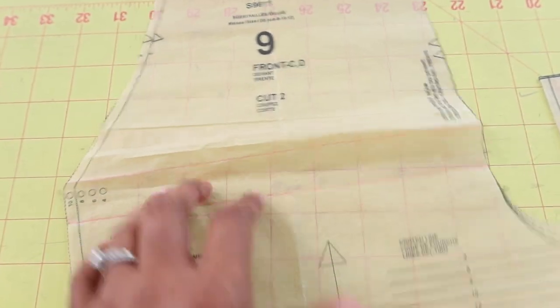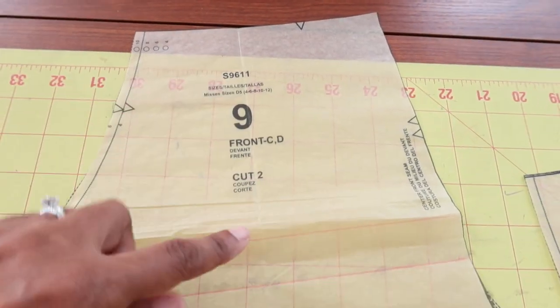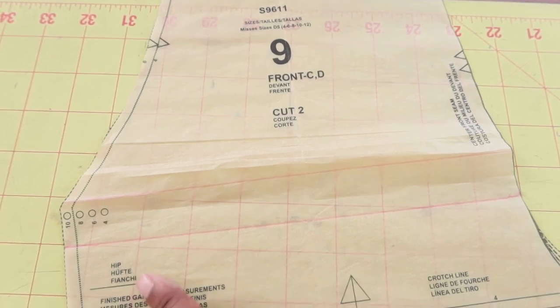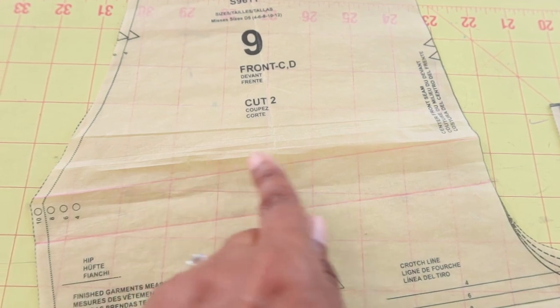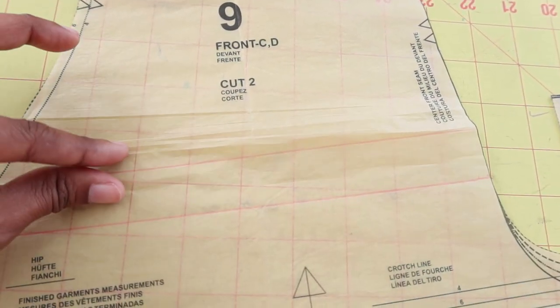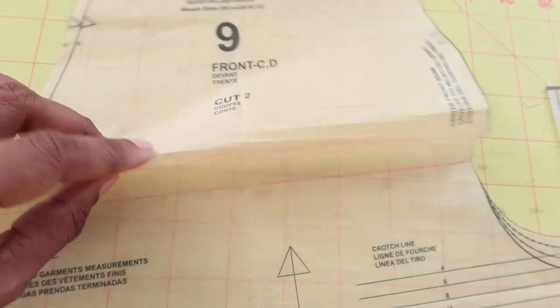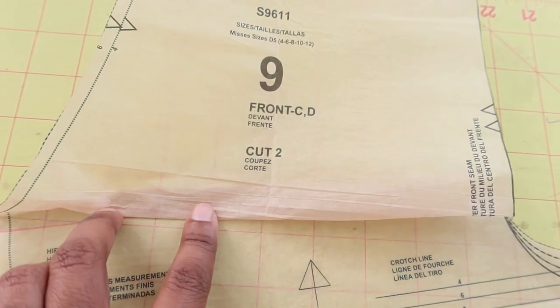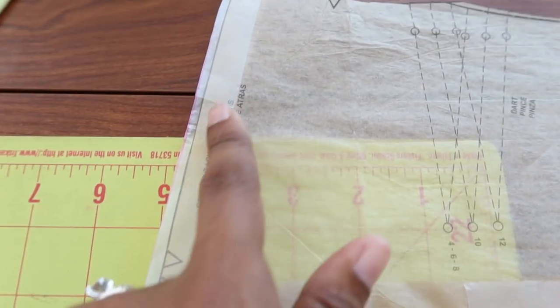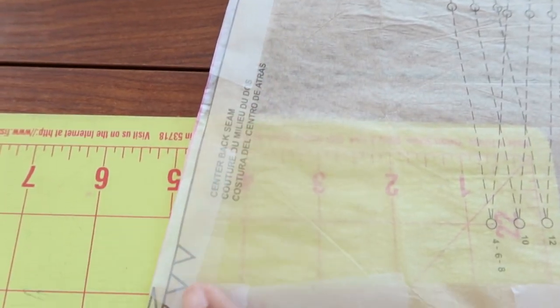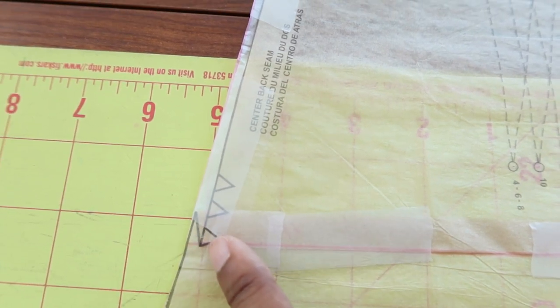I decided to shorten this height by an inch. So I drew a line across here and then an inch up from this line, drew another line. I'm going to fold this down onto this line and then tape it similar to how I did here. Then I ended up truing up the side here just to make sure everything is even and lines up.